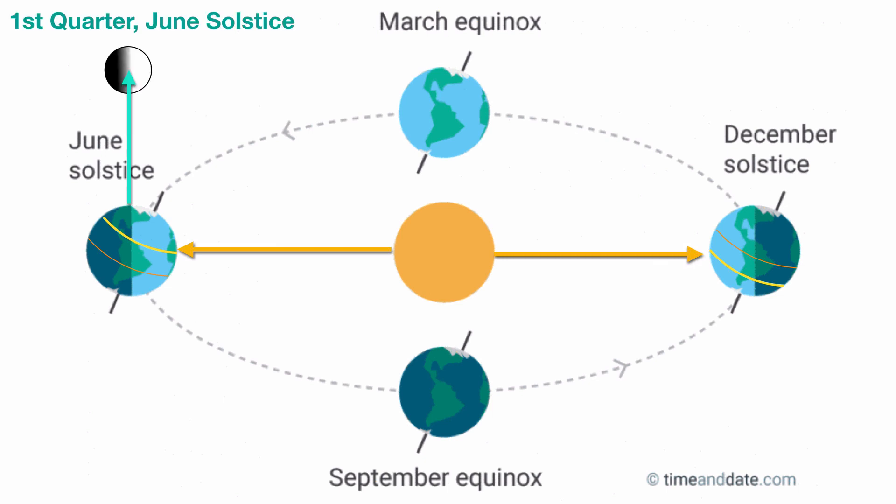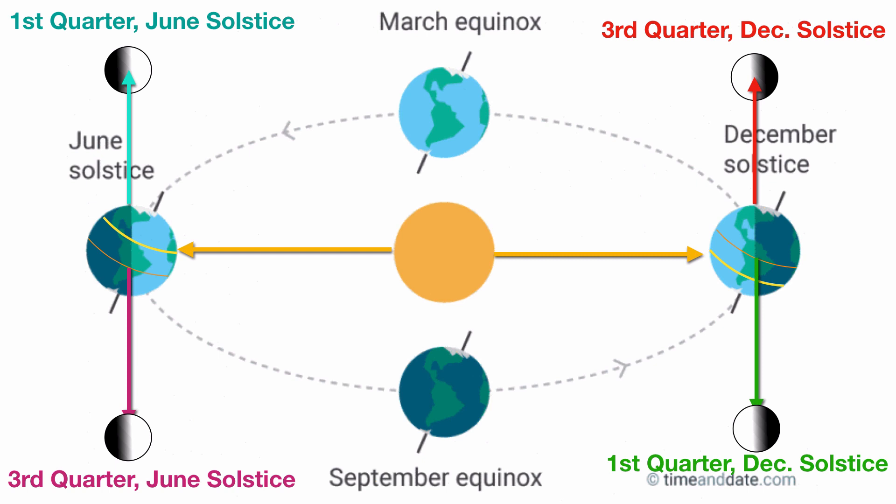If we plot the first quarter during the June solstice, the moon is in the same position relative to the sun that the Earth was at the equinox. In other words, the moon should be above the equator. The same applies for the December solstice — first quarter or third quarter — the moon should be above the equator on these solstices because the moon is 90 degrees out of phase with the sun.